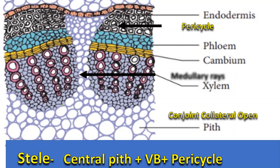The cells between the vascular bundles are called medullary rays. These cells help in lateral conduction. The central part of the stem is occupied by parenchymatous tissue, which is called pith.